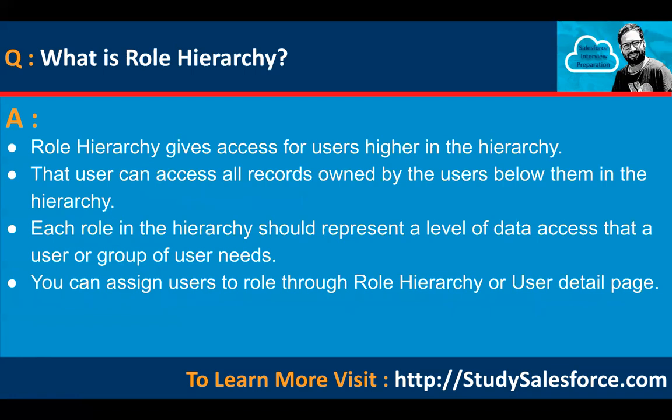Role hierarchy gives users higher in the hierarchy access to all records owned by users below them. Each role in the hierarchy should represent a level of data access that a user or group of users needs. You can assign users to a role through role hierarchy or the user detail page. For example, if you are working in an organization and report to your manager, role hierarchy ensures your records are visible to your manager even if OWD is set to private for that object.